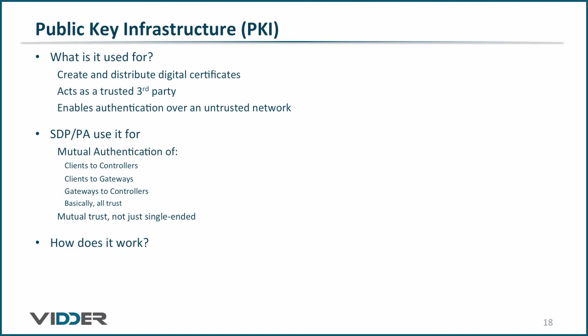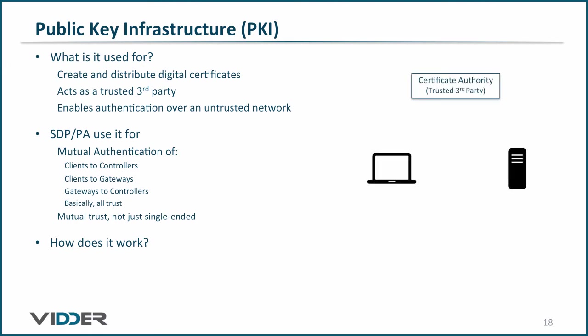So how does it work? Here's the short version. PKI defines a certificate authority which will generate and sign X509 digital certificates and distribute them to clients, servers, and users. In order to receive a digital certificate, an entity must communicate with the certificate authority and prove that it is trustworthy. Somewhere in this communication, an asymmetric key pair will be generated.